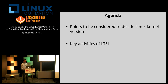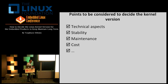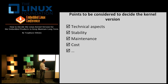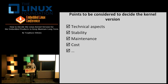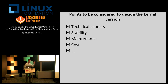To decide the Linux version in the product standpoint, there are a number of aspects. First one is the technical one. And another one is stability, maintenance, and cost. So most of the production engineers are always looking at these aspects. I will talk more deeply about each aspect.